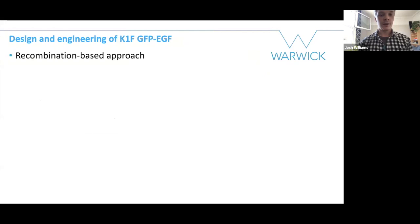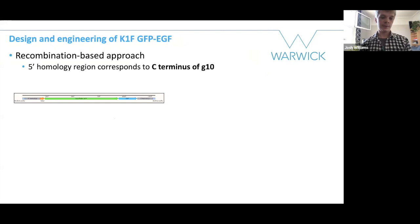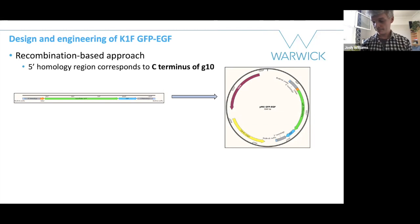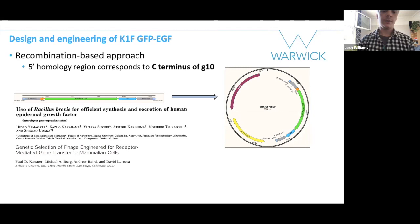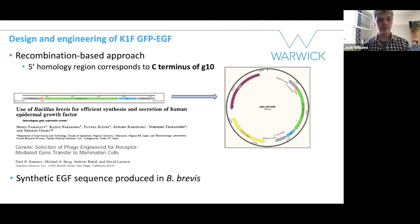For the design, I used a recombination-based approach as it is fairly straightforward. You can see in the diagram two homology regions, five prime and three prime, where the five prime corresponds to the C-terminus of G10. I integrated this into the PMX plus vector which confers kanamycin resistance. The EGF sequence I chose is a synthetic sequence that was produced in Bacillus brevis in a 1989 paper.